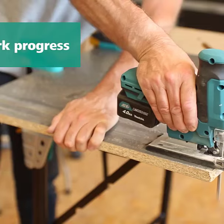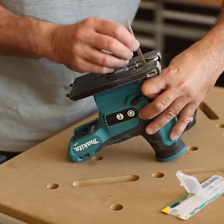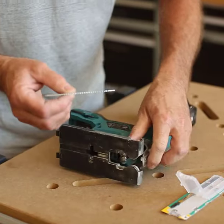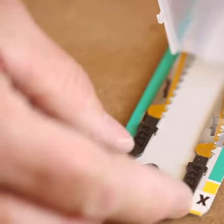In summary, the T-shaft jigsaw blades from Wolfcraft are specialized tools tailored for achieving clean cuts on both sides, with a particular focus on projects like kitchen worktops where precision and cleanliness are paramount.